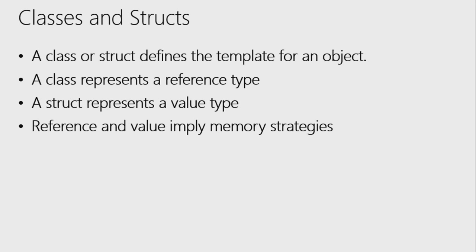So, constructing complex types. We have two foundational ways: a class and a struct. They're not the same thing — that's why they're two separate words. A class or struct defines the template for an object. The difference between an interface and classes or structs is that classes and structs actually implement behavior, whereas an interface just promises that behavior will be implemented.